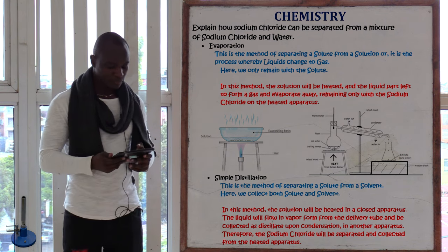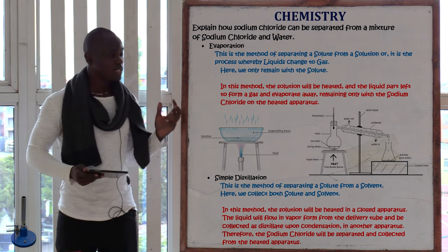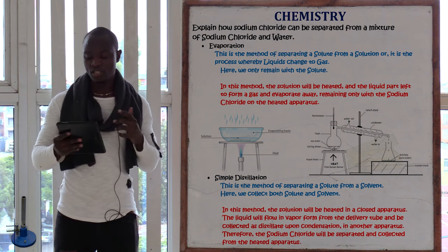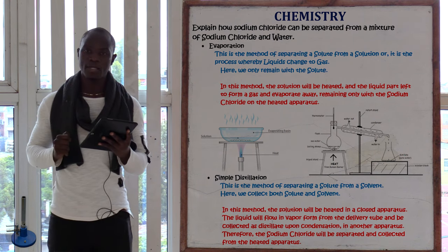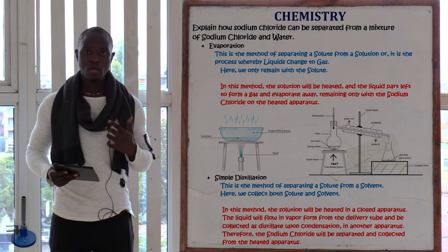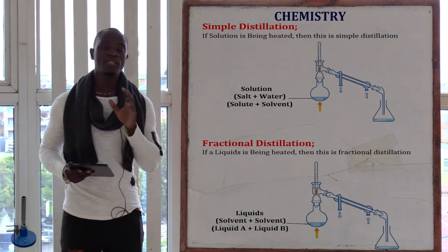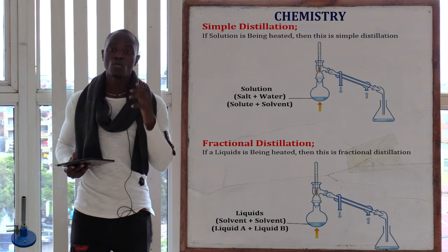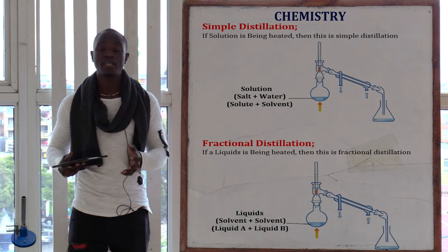In simple distillation of this mixture, if we heat the solution, water is collected on one side and sodium chloride is collected on the other side. That satisfies the question of how sodium chloride can be separated from a mixture of sodium chloride and water — we can use evaporation or simple distillation. Remember, we have two types of distillation: fractional distillation, which separates two miscible liquids with different boiling points, and simple distillation, which separates solutions only.